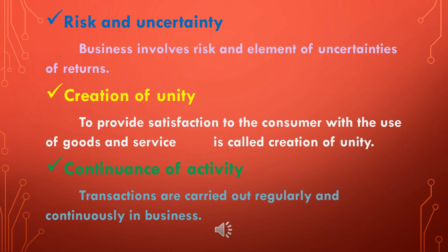The fifth characteristic is that business is a continuous activity. Transactions — exchange of goods and services — are carried out regularly and continuously. Business is an ongoing, continuous process; every day, as per demand, we get products. A business carries out purchase and sales continuously with the objective of profit. If a trader builds a building for residence and later sells it for profit, it is not business because it is accidental and temporary, not a regular or continuous activity.